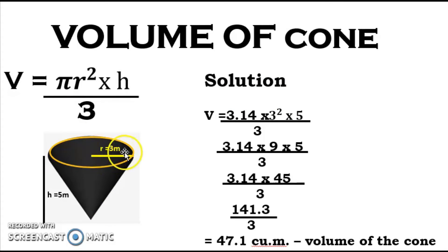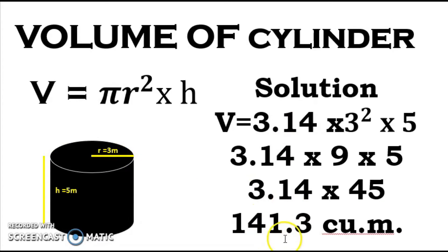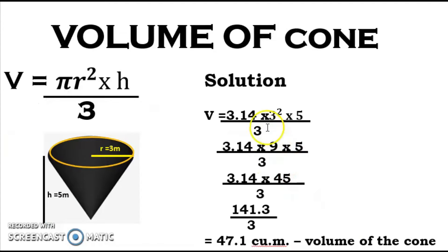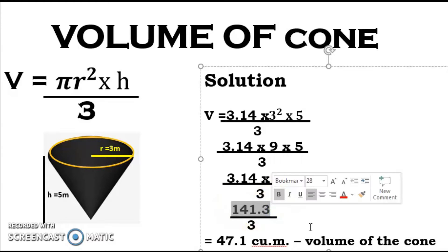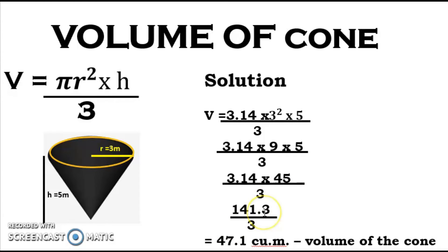Using the same given values — radius 3 meters and height 5 meters — if you remember our cylinder volume was 141.3 cubic meters. So 3.14 times 3 squared times 5 divided by 3 gives us 141.3 divided by 3.